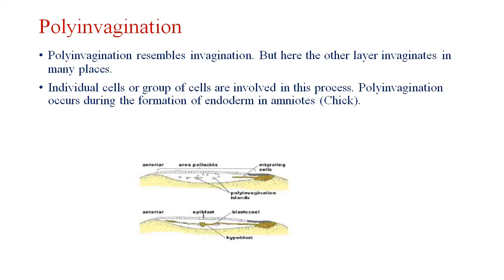Poly-invagination resembles invagination, but here the other layer invaginates in many places. You can see the layers invaginate from many places. Individual cells or groups of cells are involved in this process. It occurs during the formation of endoderm in amniotes.